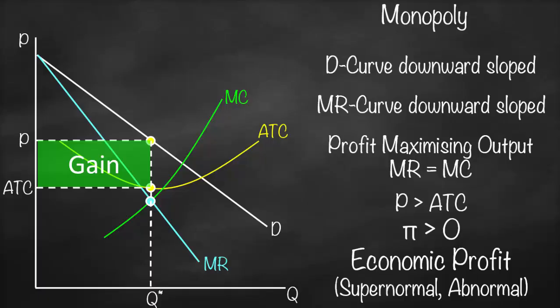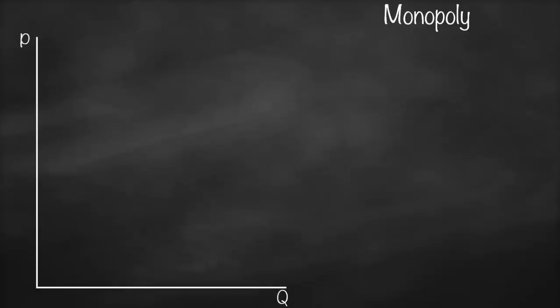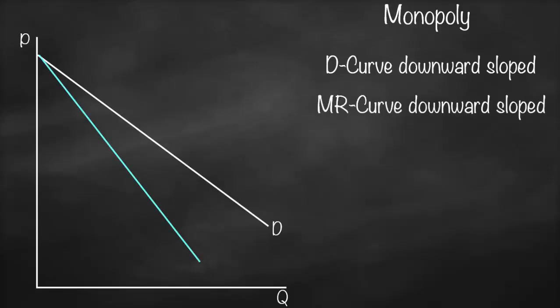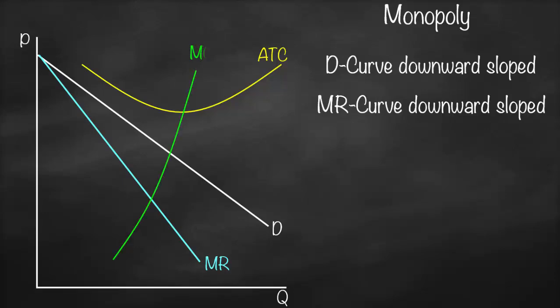Does this mean monopoly always creates supernormal profit? No — sometimes they make a loss. Let's look at the graph. Here we have our x-axis (quantity) and y-axis (price), with a downward-sloping demand curve, a downward-sloped marginal revenue below it, and in this example the average total cost is above the demand curve. Then we draw our marginal cost, which intersects average total cost at its minimum.